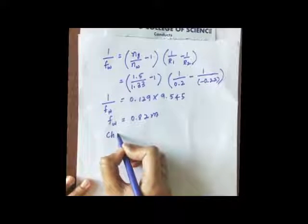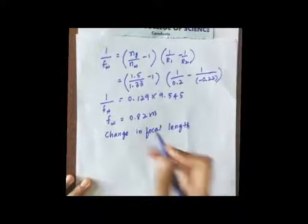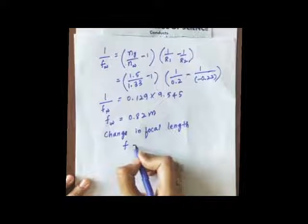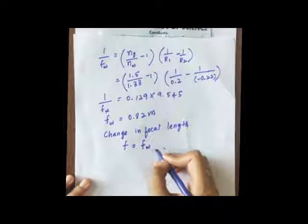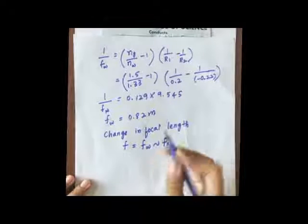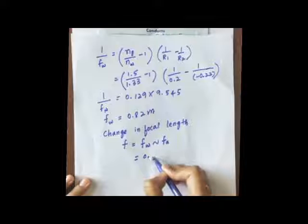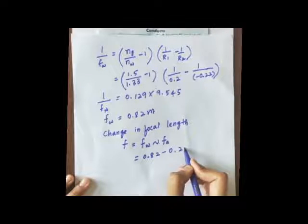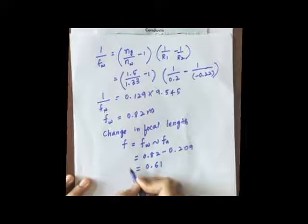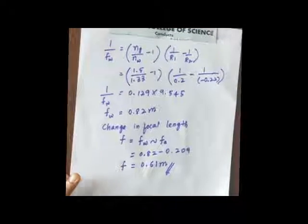Now, finding the change in focal length: ΔF = F_water − F_air. The focal length in water is 0.82 m and in air is 0.209 m. Subtracting the smaller from the larger: 0.82 − 0.209 = 0.61 meter. This is the change in focal length when the lens is moved from air to water. That is the final answer.